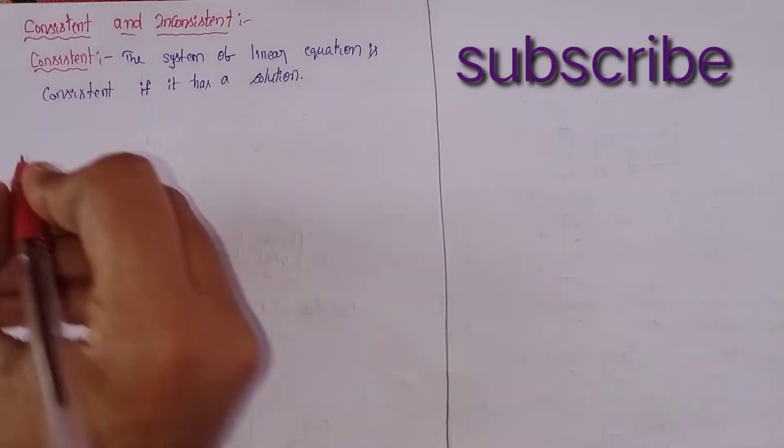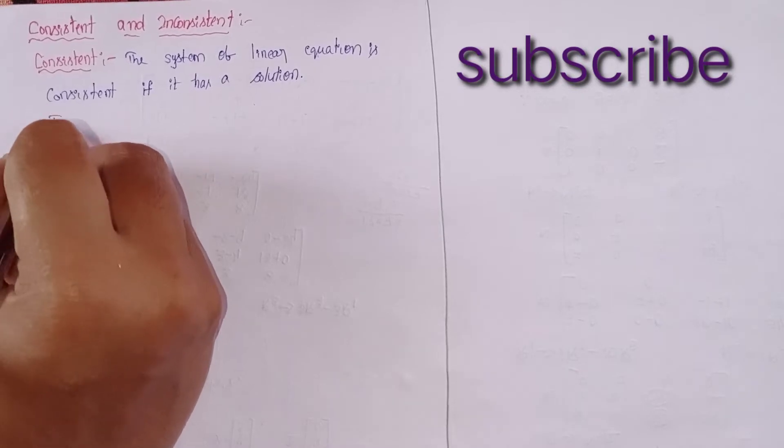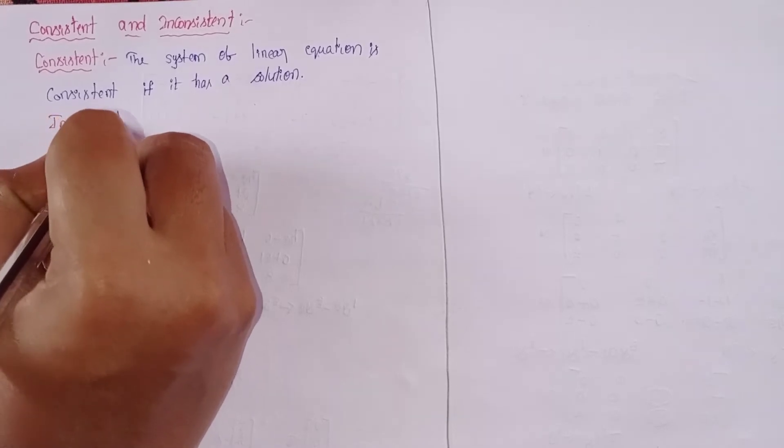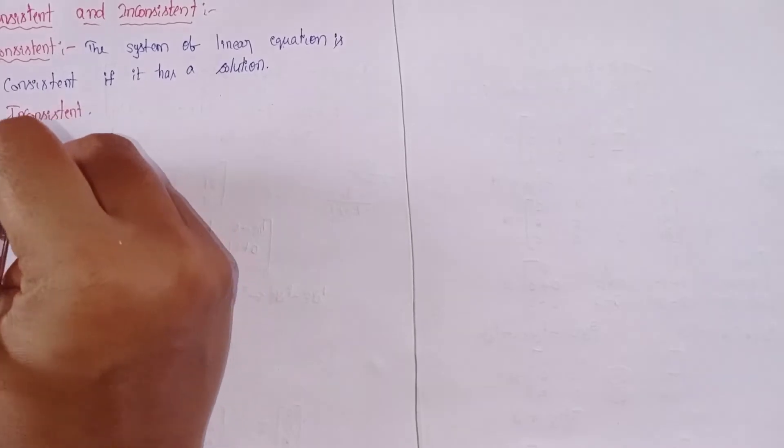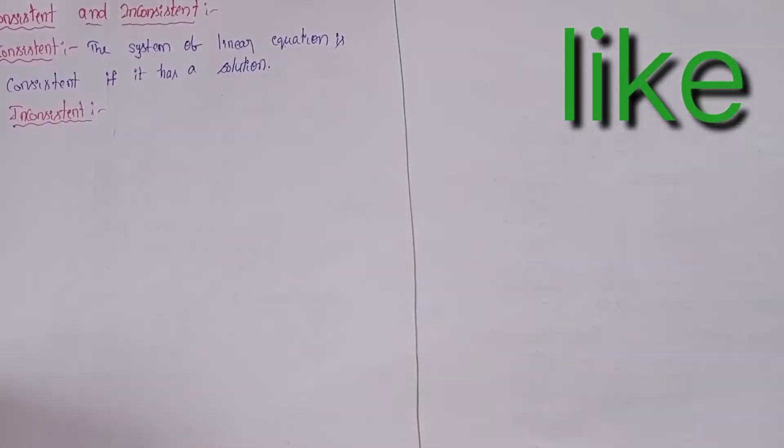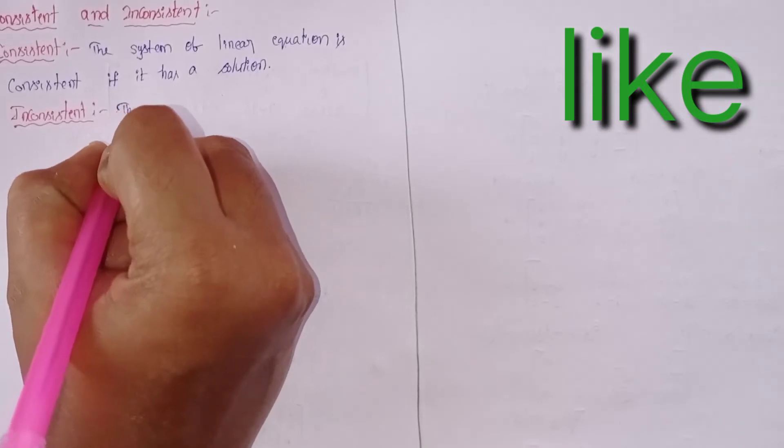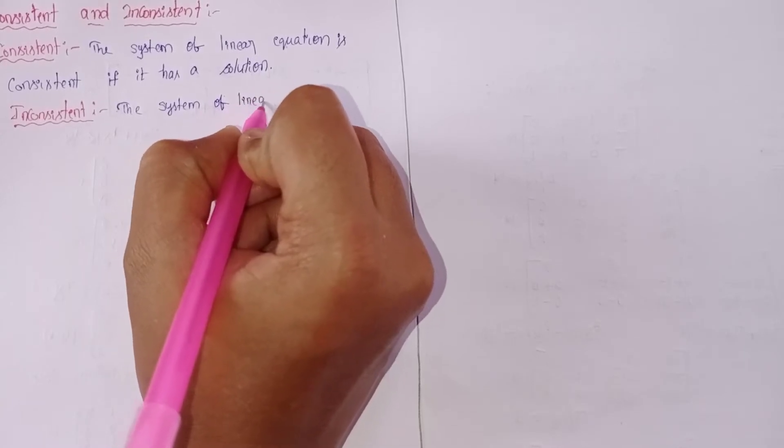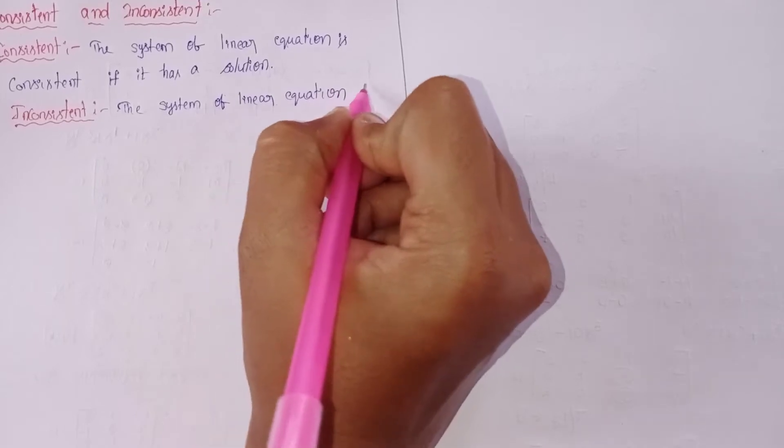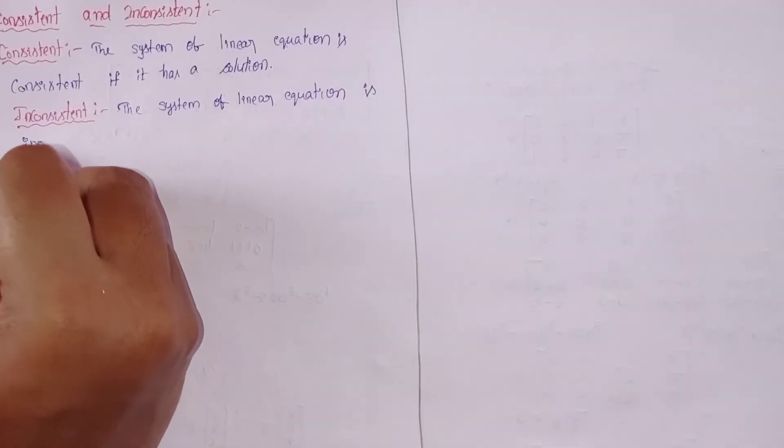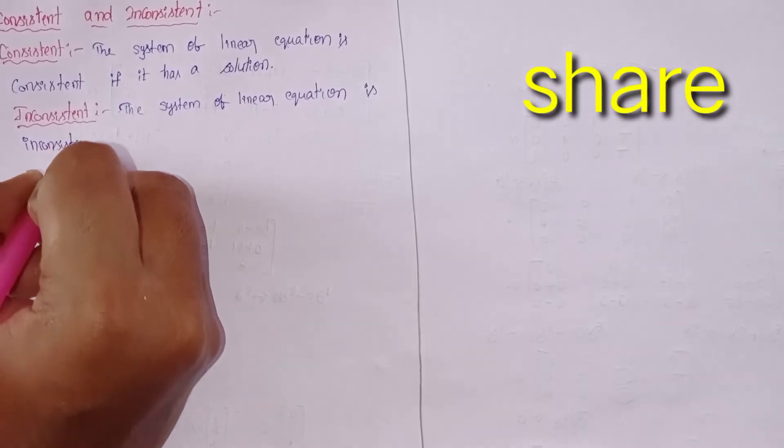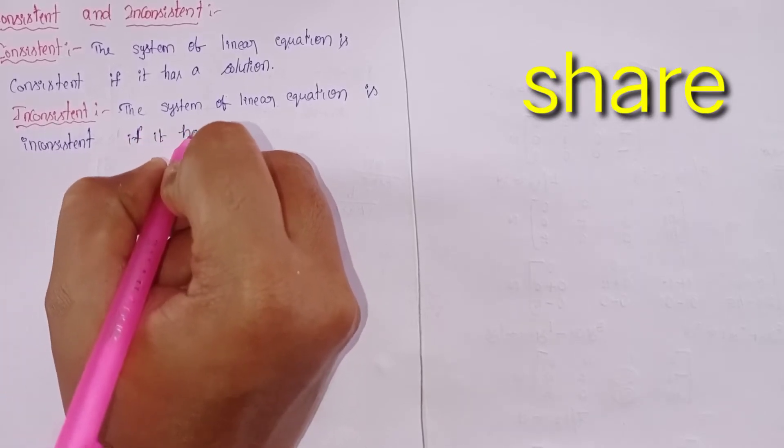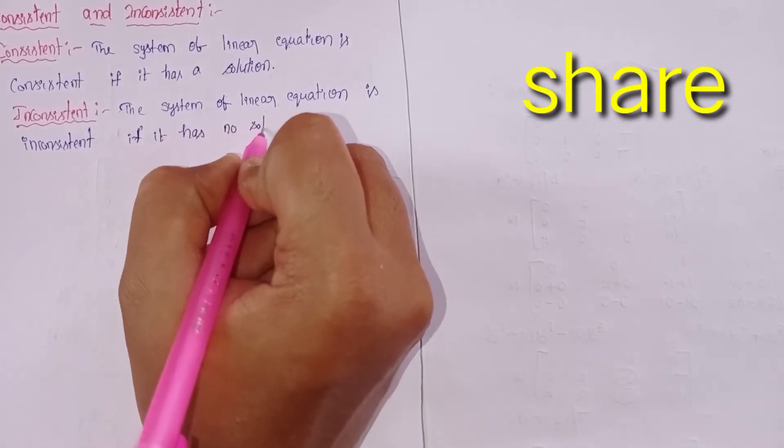Inconsistent has no solution. Inconsistent: the system of linear equation is inconsistent if it has no solution.